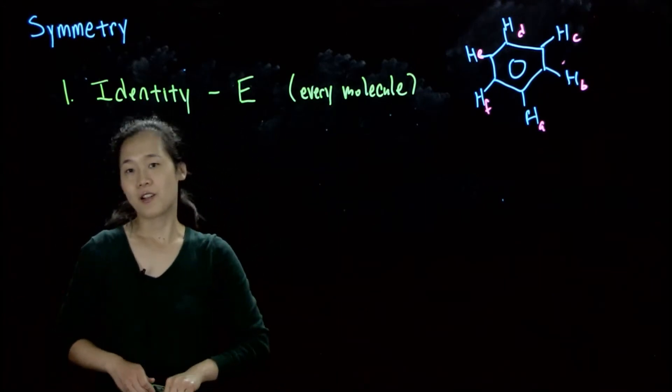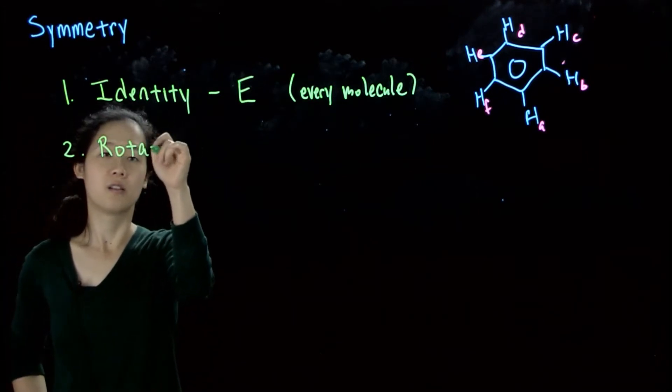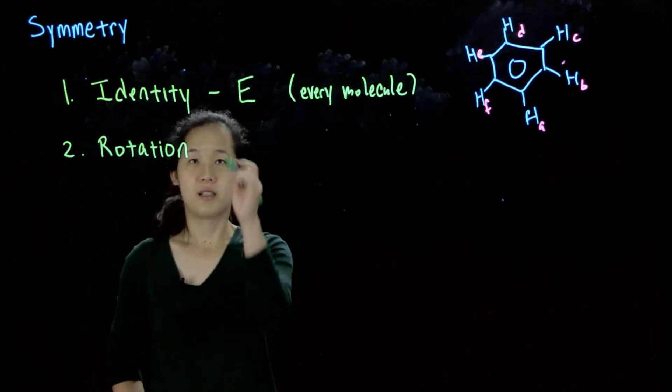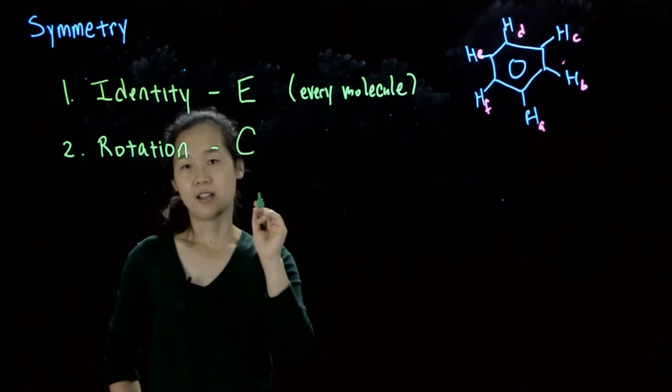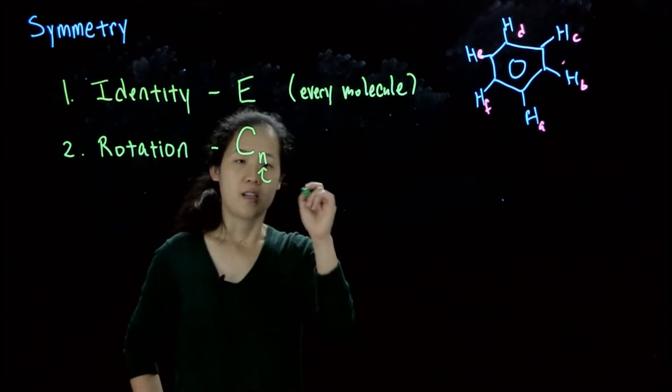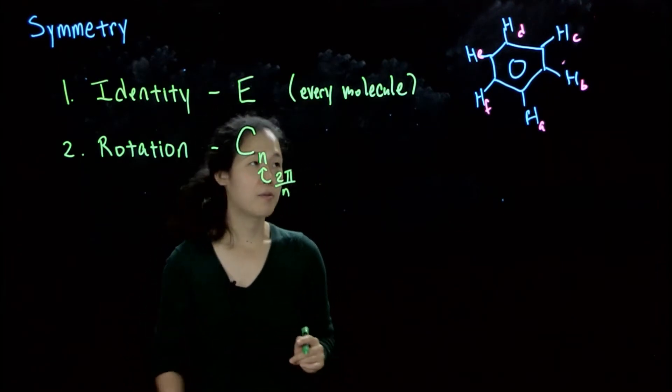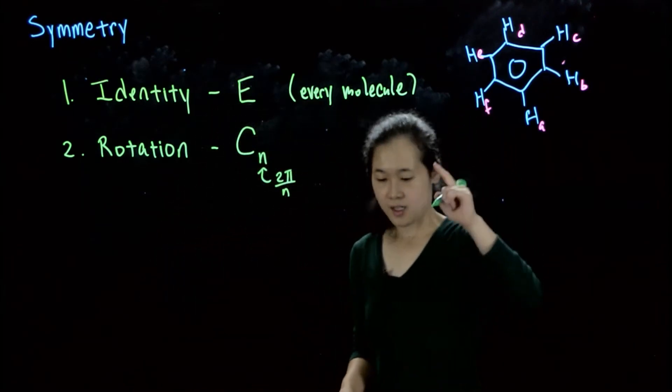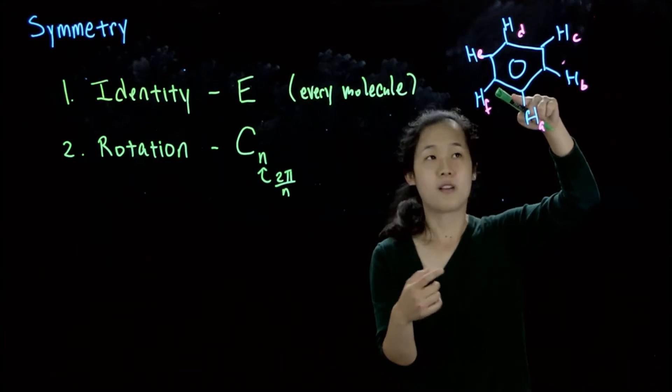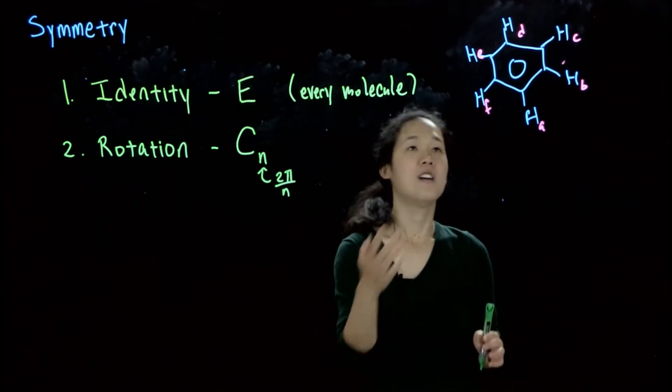The second most common symmetry element is rotation. And the notation here for when you have a rotation symmetry element is you have what's called a C axis. So C and then sub N. And this is where N is going to be 2 pi over N rotation. So for example, if we take the benzene, if you rotate A to D, that's what's called a C2 because we're rotating by 180 degrees, aka we're rotating by pi radians, so 2 pi over 2, that's therefore C2.